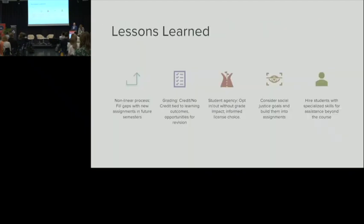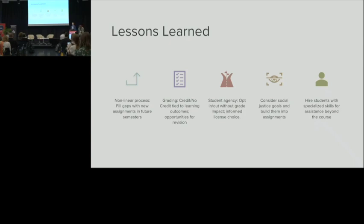A few lessons learned that you'll see reflected in the roadmap: one is that it's a nonlinear process — additional assignments were built in to fill gaps that existed in the textbook. Grading is a big issue with open pedagogy because it's often a very different way of working for students. She used specifications grading — pass/fail or credit/no credit — and students were given the opportunity to revise their assignments. This mitigates student anxiety around letter grades and also means less remediation needed on the back end if students can improve their work.